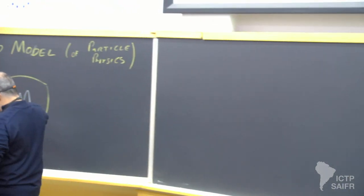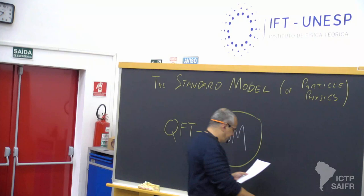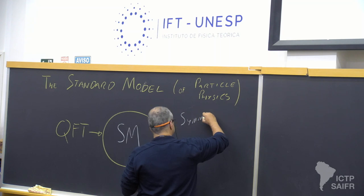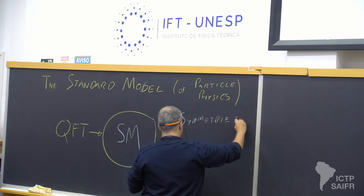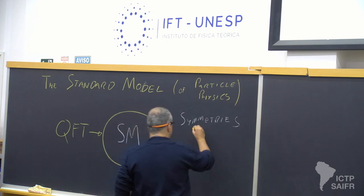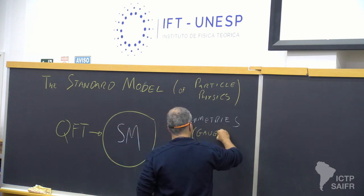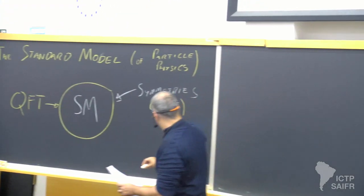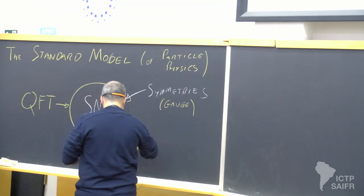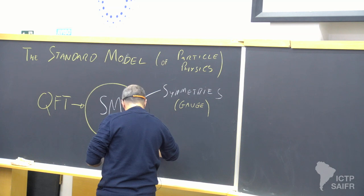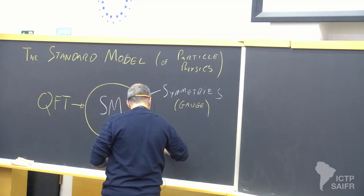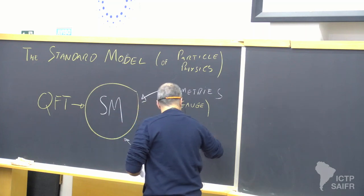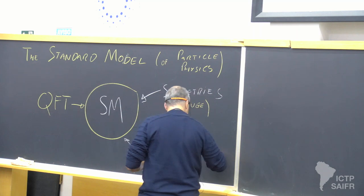As I said, you have three ingredients: quantum field theory, and then of course you need symmetries — specifically, gauge symmetries will be very important. And then finally, the breaking of the symmetries, especially when they happen spontaneously: spontaneous symmetry breaking, which we write as SSB.